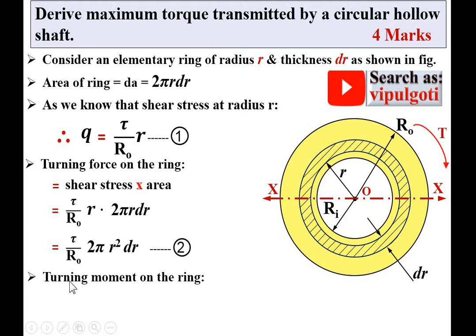Now, turning moment on the ring. You know that turning moment is force times distance. So the turning force τ/Ro·2πr² times distance r equals τ/Ro·2πr³·dr.